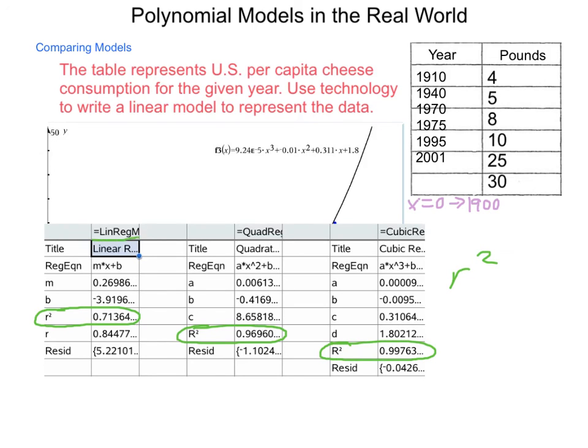So, in a linear regression model, you can see R squared is 0.71. In our quadratic regression, we jump from basically 71% accurate to a 96.9. And then, in a cubic regression, we go up to a 99.73% accuracy. So, the higher we go, or the closer that R squared value is to 1, the better it's going to be at predicting future events.